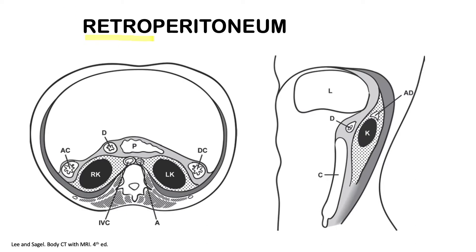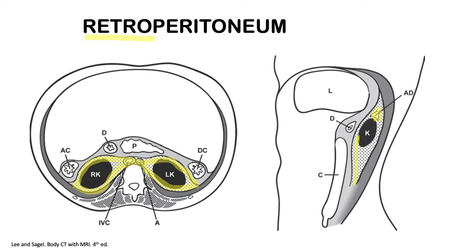We're going to talk about the retroperitoneum. It's called retroperitoneum because it's at the back of the peritoneal cavity. This space, highlighted in yellow, contains the kidneys, the IVC, the aorta, and on the right side it also contains the adrenal glands. This area is called the perirenal space.